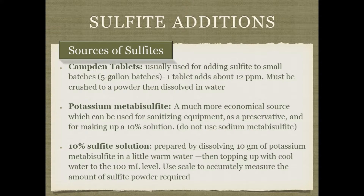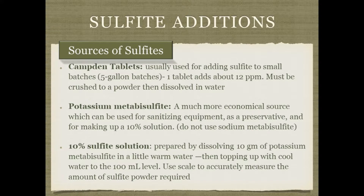Many of us start with Campden tablets — easy to crush into water and add to mead, but more expensive. Any sulfite can lose potency over time as SO₂ off-gases. Most meadmakers eventually switch to powdered potassium metabisulfite as it's more economical and versatile — useful for sanitizing solutions or a 10% sulfite solution. An accurate scale is essential; don't use a teaspoon. We want just enough sulfites and no more.